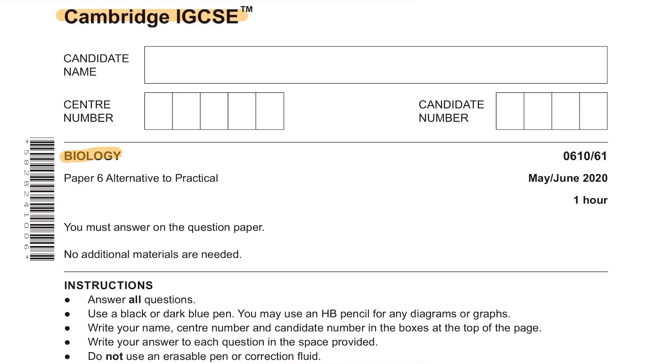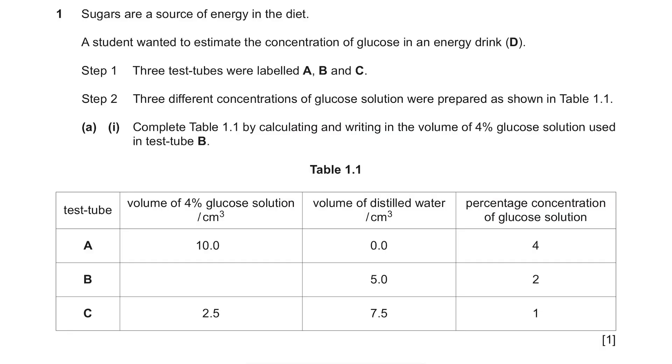Cambridge IGCSE Biology May June 2020 Paper 6 in 1 Video. Question 1. Sugars are a source of energy in the diet. A student wanted to estimate the concentration of glucose in an energy drink.